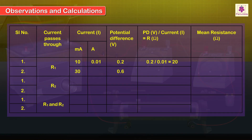Observations and Calculations: Calculate the value of R1 by applying Ohm's Law. For the second set of readings, R1 is equal to 0.6 divided by 0.03, which equals 20 ohms.